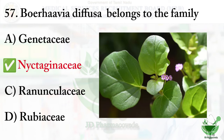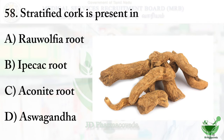Question number 58: Stratified cork is present in — option A, Rauwolfia root; option B, Ipecac root; option C, Aconite root; option D, Ashwagandha. The right option is option A, Rauwolfia root.